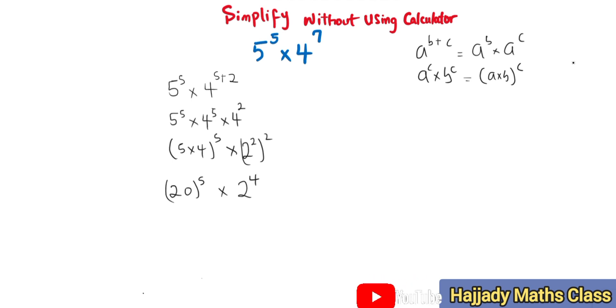Here, my 20 can also be split as 2 times 10 raised to power 5 multiplied by 2 raised to power 4. Using this same rule from here, I'm going back here.